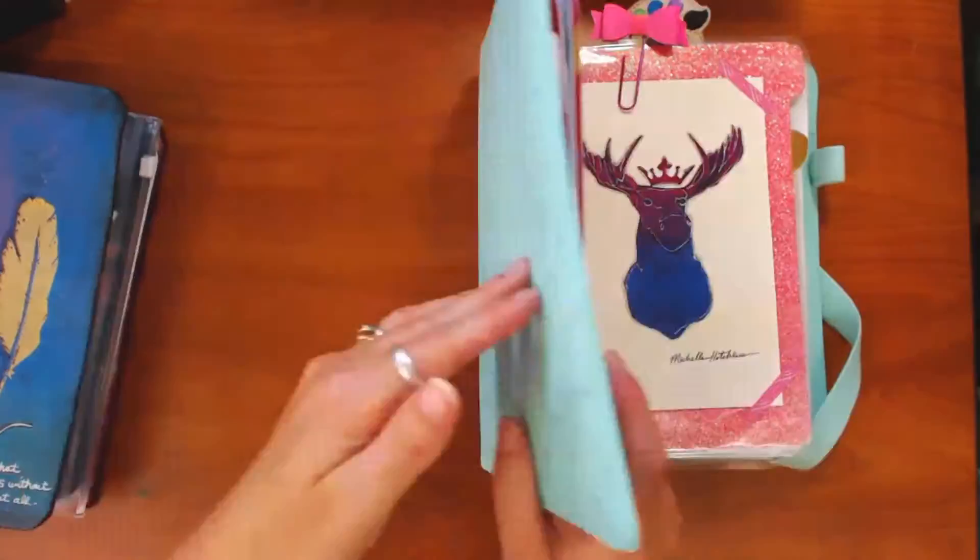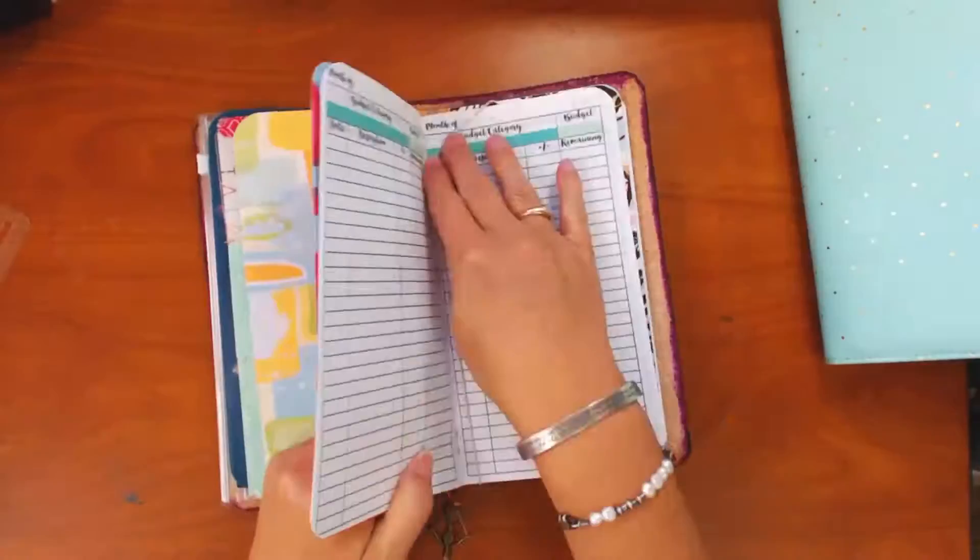And then once you're done with your Dory insert in your ring planner, you can just simply put it right back in your Dory.